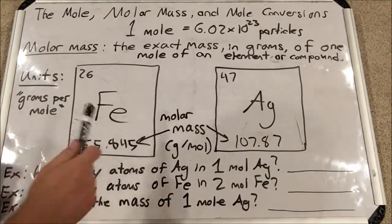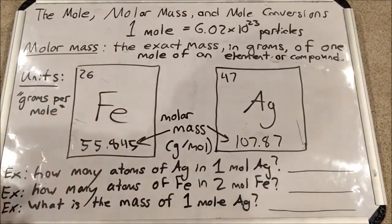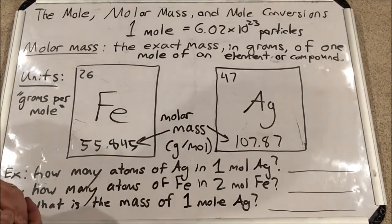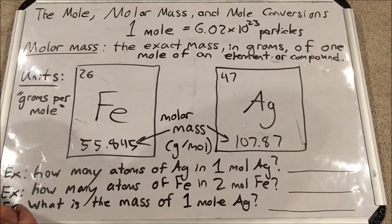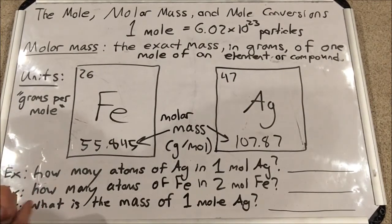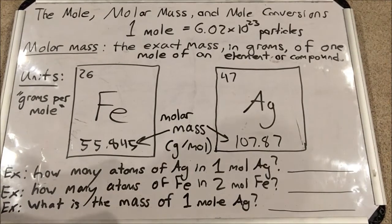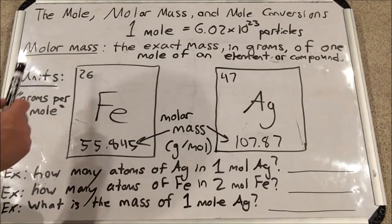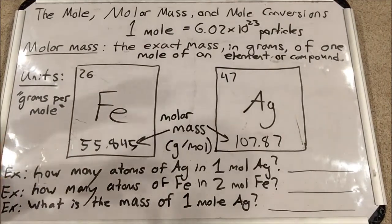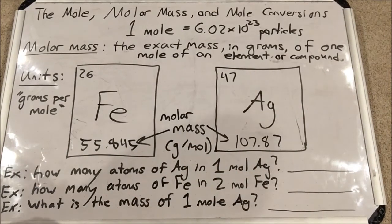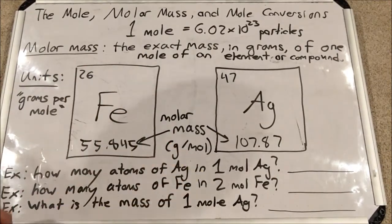Here are two particular elements — iron and silver. Their atomic numbers at the top tell you how many protons are in the nucleus. The number at the bottom, which you might have first learned as the weighted average of the isotopes by percent abundance, is actually also the molar mass of that element. The units of molar mass are grams per mole — the number of grams of something in a mole of that thing. These numbers at the bottom of each periodic table element's listing give you that molar mass.